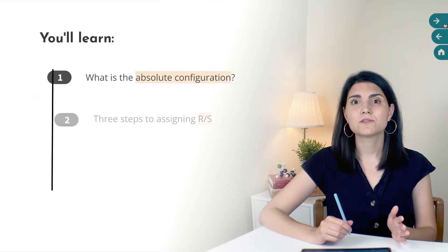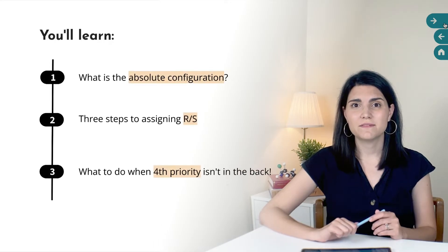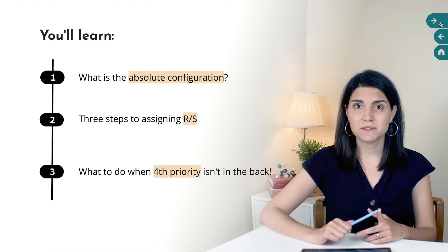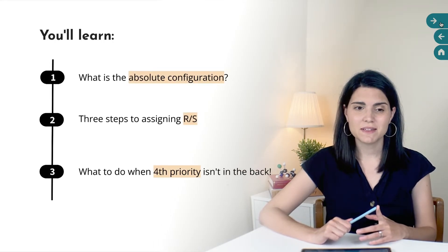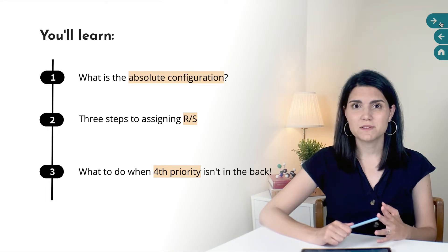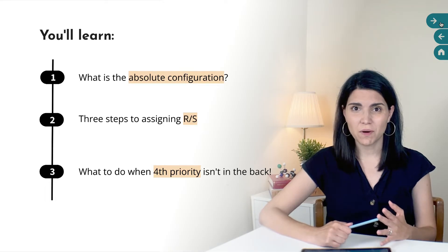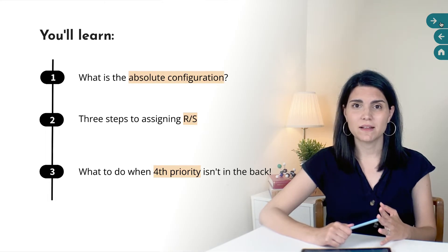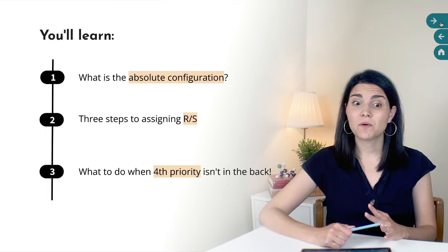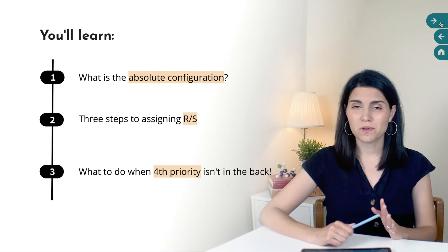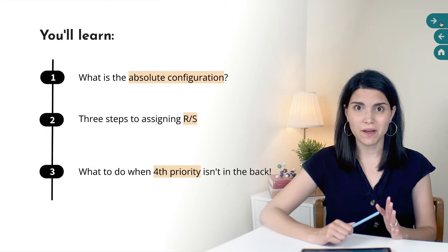Here are the three things you'll learn by the end of this video: what the absolute configuration is and why you need it, the three steps to assigning R or S to a chirality center, and what to do if your fourth priority group is not pointing away from you.